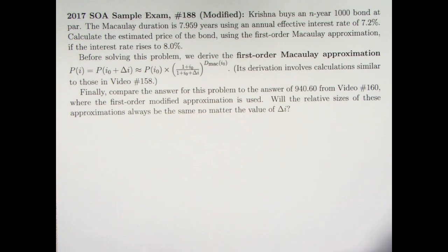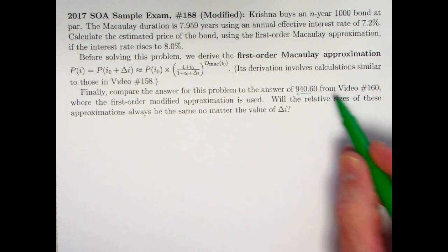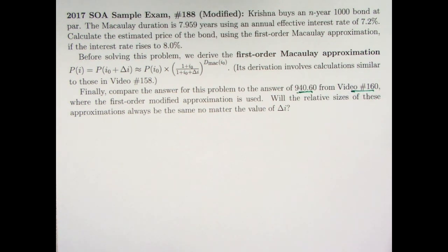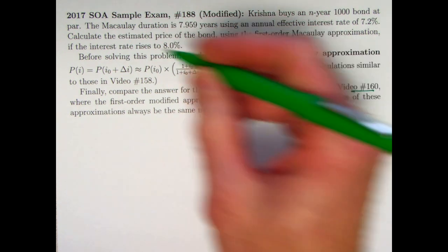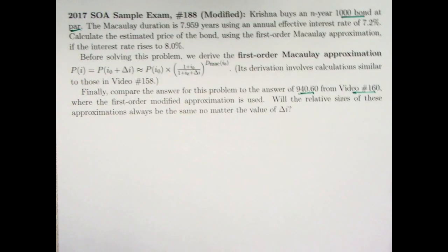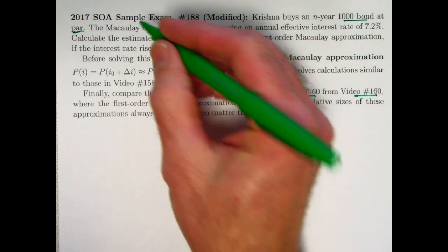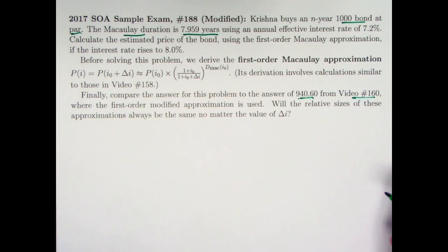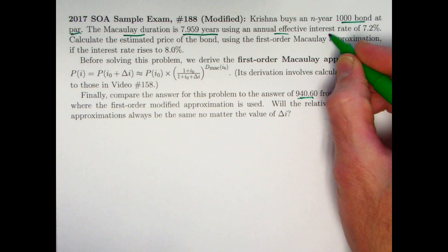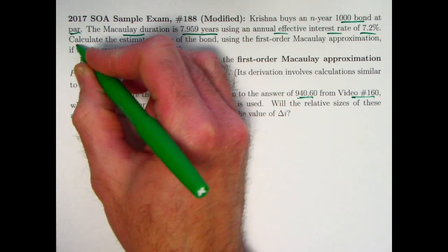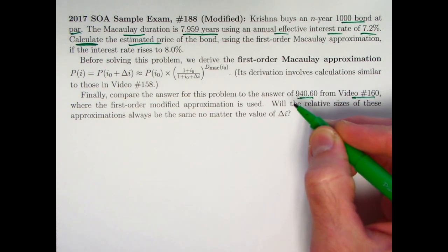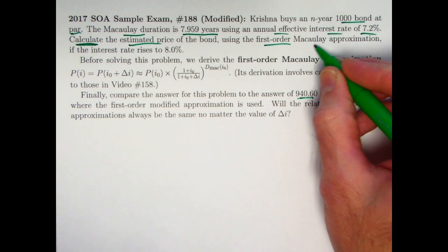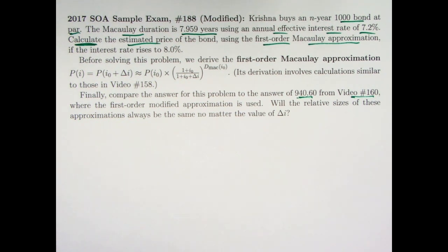The first paragraph you see here is the problem statement itself. This is pretty much the same statement as the problem we did two videos ago in video number 160, and I'm quoting the answer from video 160. Krishna buys an annuity bond for 1,000 — it's at par, so the price of the bond equals the redemption value. The Macaulay Duration is 7.959 years, with respect to an annual effective interest rate of 7.2%. We want to calculate an estimated price using the First Order Macaulay Approximation, not the First Order Modified Approximation.